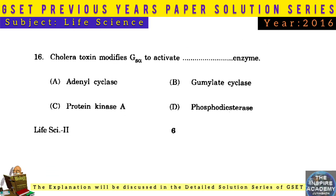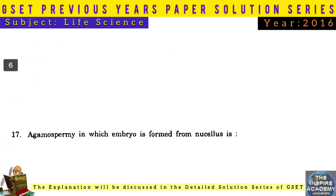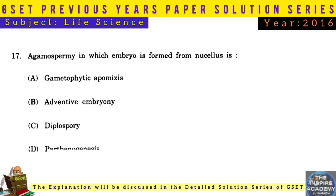Question No. 16: Cholera toxin modifies Gs-alpha to activate which enzyme? Answer: Adenylyl cyclase.